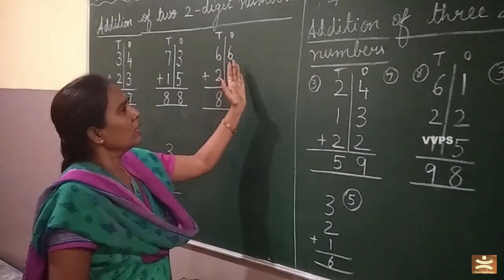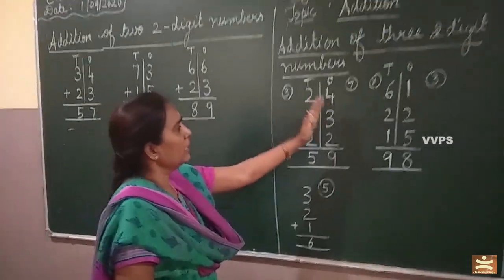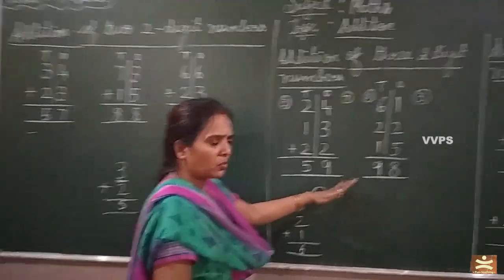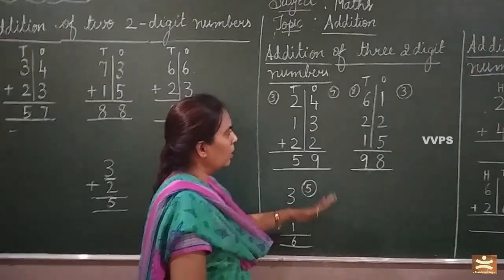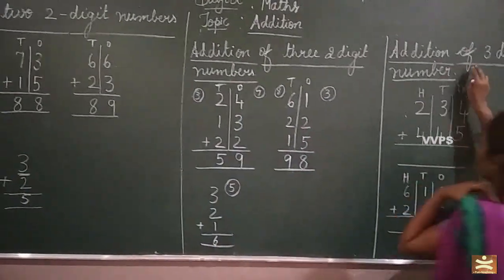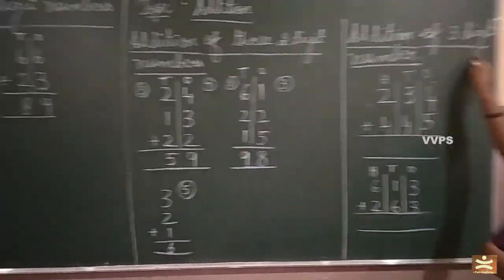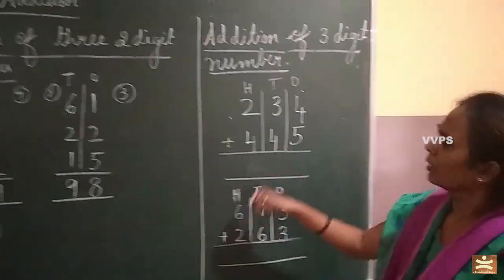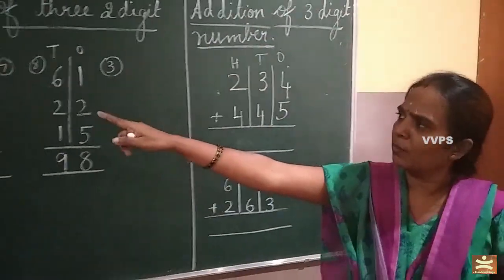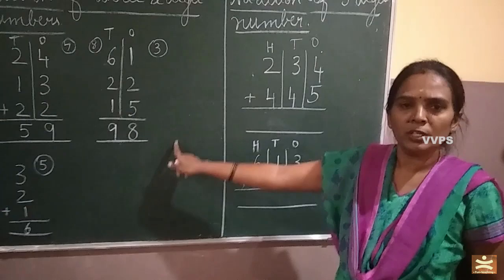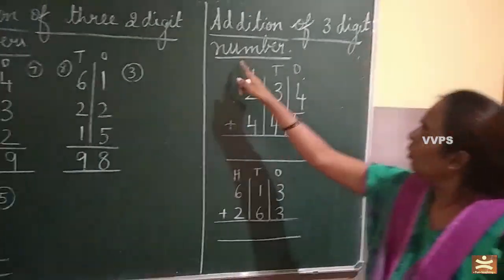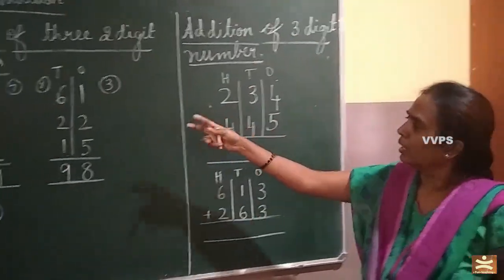Two digit number and addition of three two digit numbers — okay children, everything is very easy. Now we will move on to addition of three digit number. You have learned two digit number addition, and addition of three two digit numbers. Now addition of three digit number.